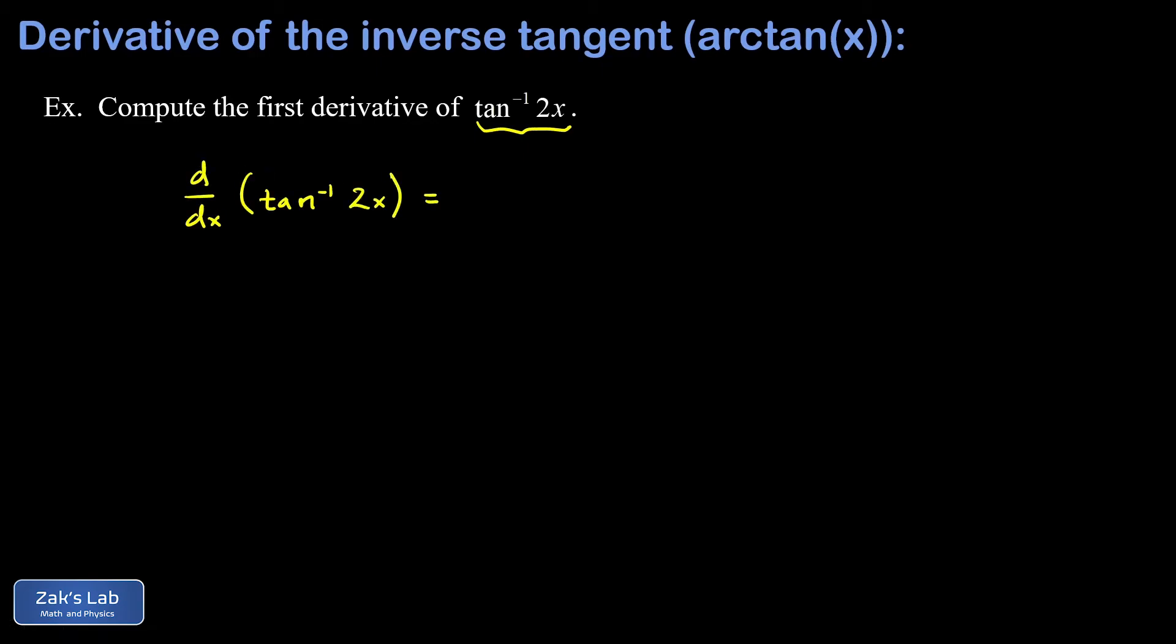To differentiate the inverse tangent of 2x, we just take 1 over 1 plus the argument of that function - that's 2x - squared, and then we have to multiply by the derivative of that argument. This is just applying the chain rule. So we have 1 over 1 plus the argument of the inverse tangent function squared, so 2x all squared is 4x squared.